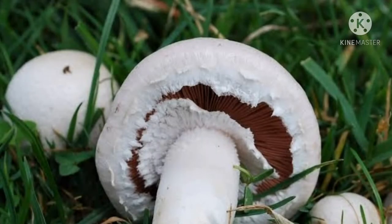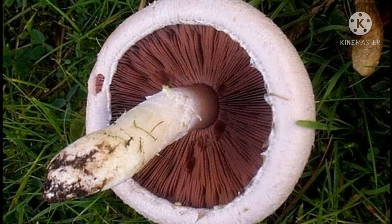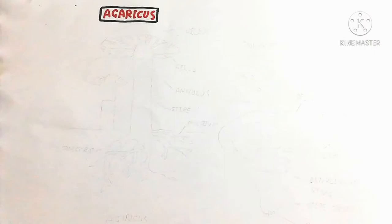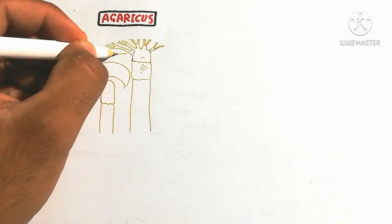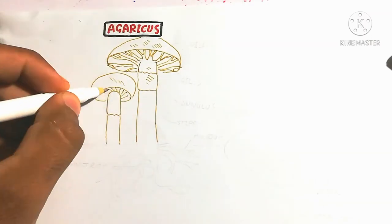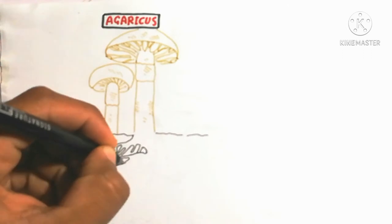Today we will talk about Agaricus, which is a mushroom present in organic matter. It is a decomposer and achlorophyllous — it is related to animals and insects rather than plants, because it does not have chlorophyll. We will discuss this mushroom which is edible for human beings.